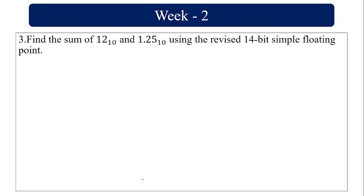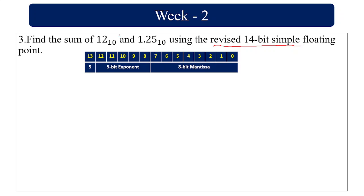Find the sum of 12 and 1.25 in decimal using the revised 14-bit simple floating point format. First find the 14-bit form of 12 and 1.25, make the exponents common, then add the mantissa parts. The revised 14-bit format has 1 bit for sign, 5 bits for exponent, and 8 bits for mantissa.